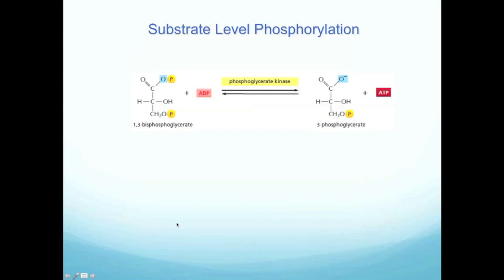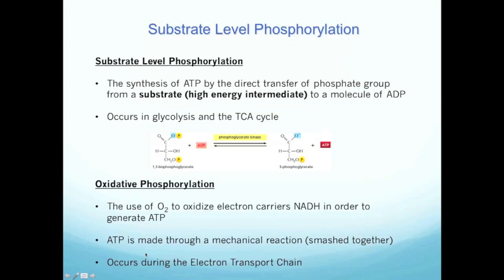Let's look at another example of substrate level phosphorylation. Here's 1,3-bisphosphoglycerate plus ADP to make 3-phosphoglycerate and ATP. So if I show you this reaction and ask you what type of reaction this is, you should know that this is substrate level phosphorylation, and you should also know that the kinase is responsible for this reaction. You'll know it's substrate level when what you're seeing is the phosphate donated from some kind of molecule or reactant.